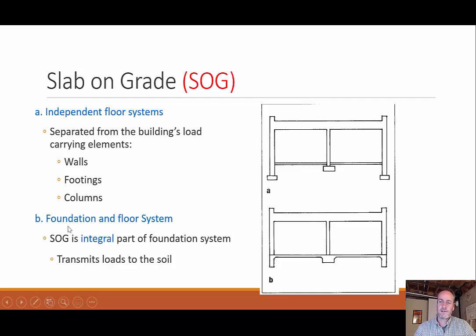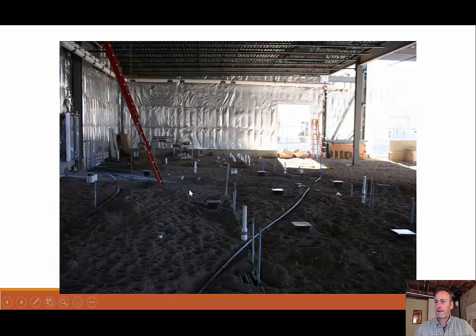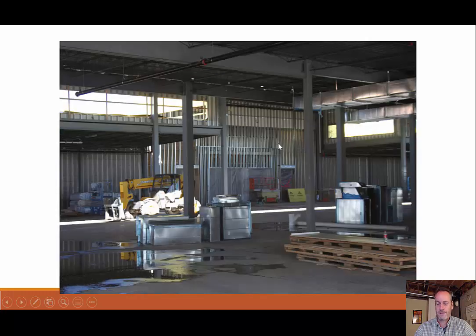We can also have a foundation and floor system that is basically one unit. The building's load would be distributed to the lower floor level — the slab on grade — and the slab on grade would distribute the load to the soil. Here's an example where the slab has not been poured yet, but the columns are already holding up the building with their foundational footings. And this would be an example of the opposite: everything as one continuous system supporting the loads from above.